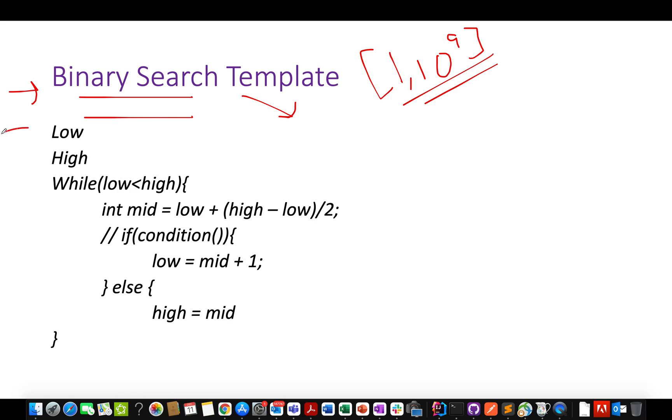The binary search template we've talked about in the past. There is a low value, a high value. While low is less than high, we calculate the middle element and pass this middle element to a condition which tells us whether to move the low pointer to mid plus 1 or high pointer to mid. This is a generic template used everywhere. The problem reduces to appropriately identifying this condition.